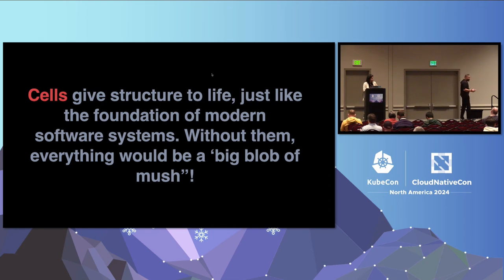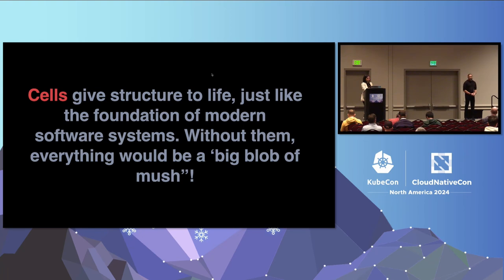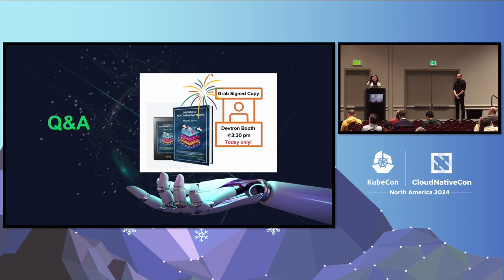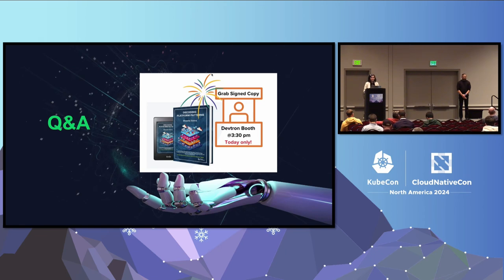In conclusion, just as the biological cell is the foundation for everything, the architectural cell becomes the foundation for building systems and subsystems inside the enterprise, addressing most of the common problems we see. We have about two minutes left, so we'll take questions. Please also join us for the book signing at booth R15, the Devtron booth, and grab your copy of Decoding Platform Patterns. A question from the audience: at what scale does cell-based architecture become actually beneficial, and when does it become overkill?